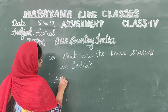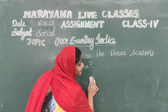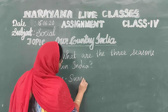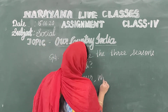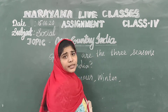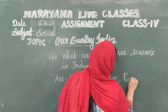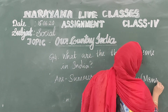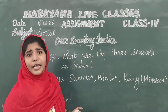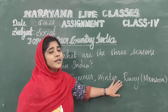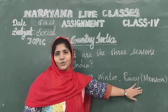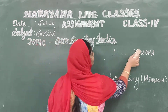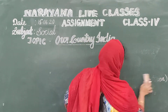What season are we facing now — such a hard one? In Tamil Nadu and India we are facing summer right now. So the three seasons are: Summer, Winter, and Rainy season — also called Monsoon season. The other name for rainy season is monsoon. So the answer is summer, winter, and rainy season.